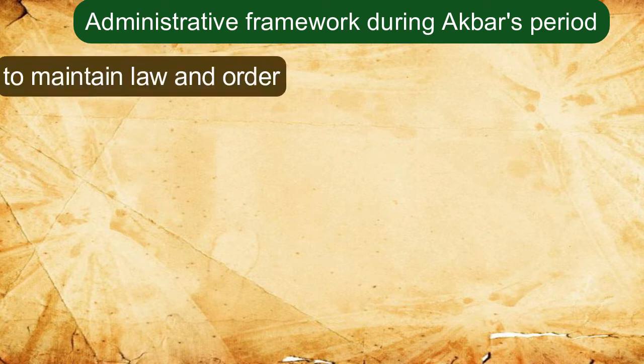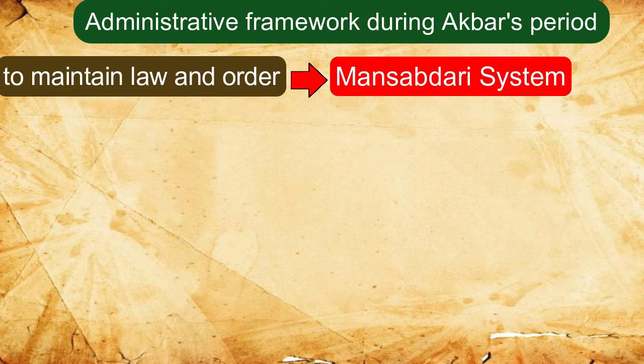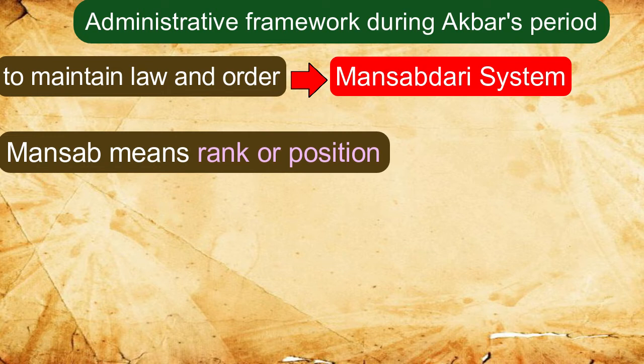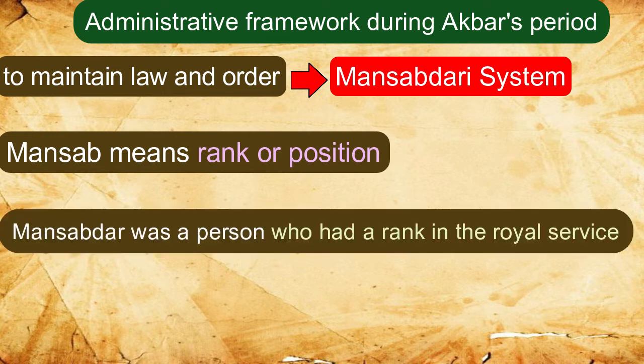Administrative Framework during Akbar's period: To maintain law and order, Akbar introduced the Mansabdari system. This system was the pillar of the Mughal administration. Mansab means rank or position, and a Mansabdar meant a person who held a rank in the royal service.